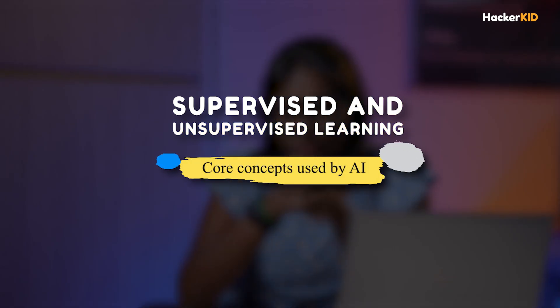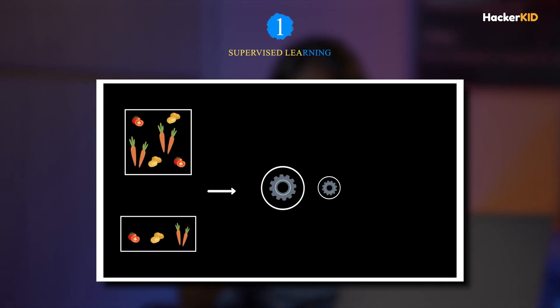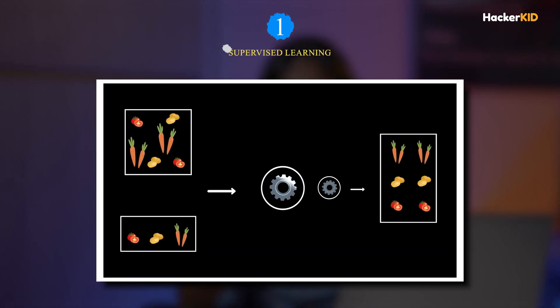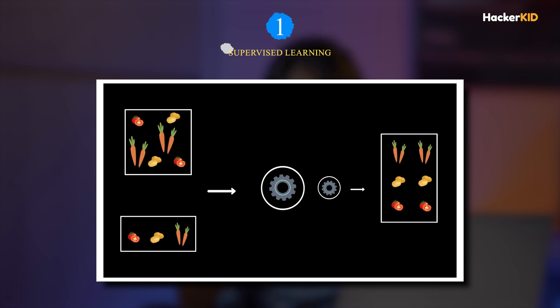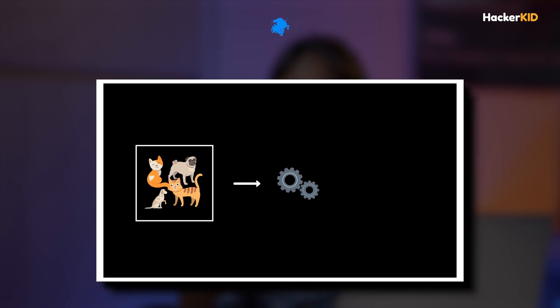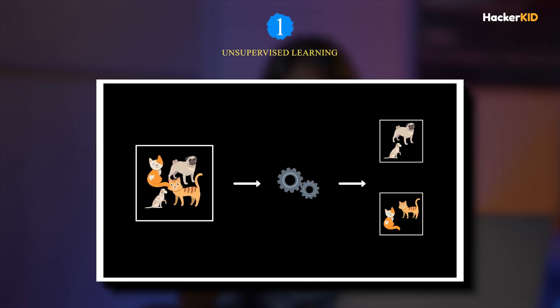Next is supervised and unsupervised learning. Supervised learning is when a computer learns from labeled examples. Unsupervised learning is when it looks for patterns and not from the labels — it is all about sorting and grouping.